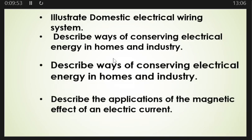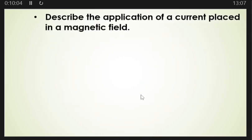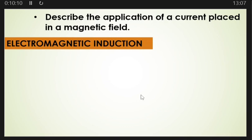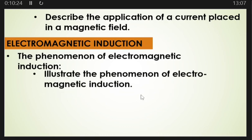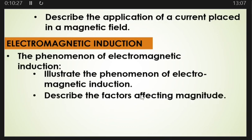You must also be able to illustrate the domestic electrical wiring system, describe ways of conserving electrical energy in homes and industry, describe the application of the magnetic effect of an electric current, and describe the application of a current placed in a magnetic field. Then move to another topic known as electromagnetic induction. Under this topic, you must illustrate the phenomenon of electromagnetic induction and describe the factors affecting the magnitude of the induced current and voltage.